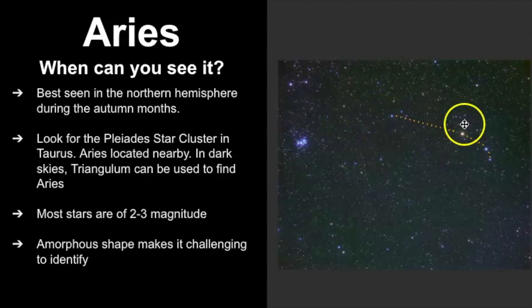So from there I'm able to point out this simple four star pattern. Another constellation that can be used to find it is Triangulum. I always encourage you to find dark skies because you're always going to have a better view when you're looking at the stars. For Aries most of the stars are between second and third magnitude and its shape, if you can call it a shape, is kind of like a curved line which makes it a little challenging to identify.